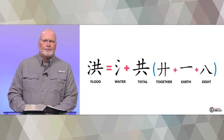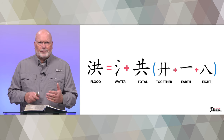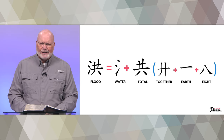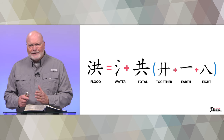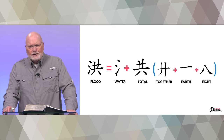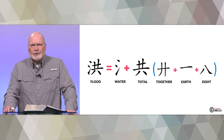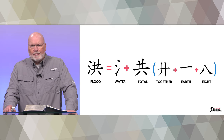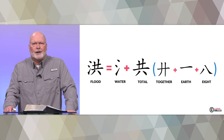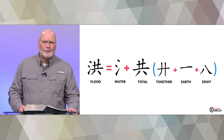From Genesis chapter 7, the Chinese symbol for 'flood' is the symbol of water combined with total — this idea of totality — together with earth and eight. God says the waters covered all of the earth 21 feet over the highest peak, and there were eight people together above the earth in the ark. Isn't it fascinating that the Chinese symbol for flood incorporates all of these elements — water, totality, earth, and eight — all paralleling the story we find in Genesis.